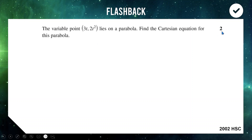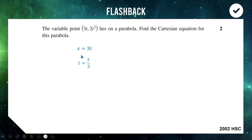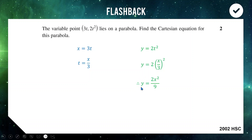As always, pause the video and have a go yourself if you want to try it. Here's my solution: we say x = 3t and rearrange to make t the subject so we can substitute into our y expression, since we're trying to get a Cartesian equation relating x and y. If x = 3t, dividing both sides by 3 gives t = x/3. Substituting into y = 2t², we get y = 2(x/3)², which is 2x²/9. That's our Cartesian equation — no t's. If you got that, well done on your two marks.